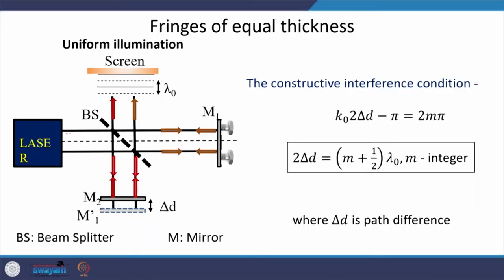Apart from circular fringe patterns, the Michelson interferometer can also produce another kind of fringes. Instead of a point source, a parallel beam of light is launched onto the setup. Here mirror M1, mirror M2, and M1′ (the virtual image of M1) are shown, with air film of uniform thickness δD between them. Since a parallel beam is incident on a uniform-thickness air film, the reflected rays from the top and bottom interfaces interfere, but the path difference is constant throughout the field of view.